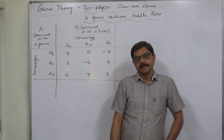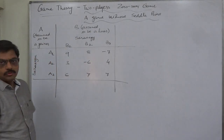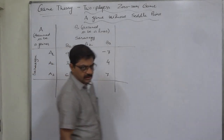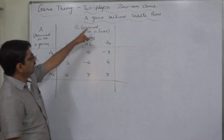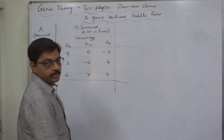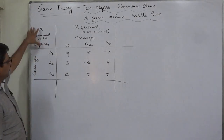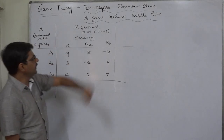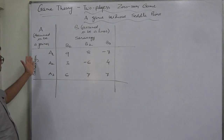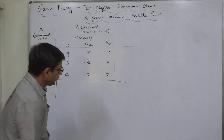Hello and welcome. Operations research — game theory, two players or two persons zero-sum game. We are going to discuss a case of a game without saddle point, or a game having no unique saddle point. There are two players: A, who is assumed to be a gainer, and B, who is assumed to be a loser. This is the payoff matrix — a profit matrix for A and a loss matrix for B.